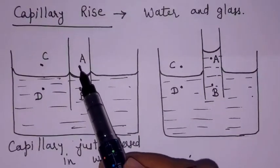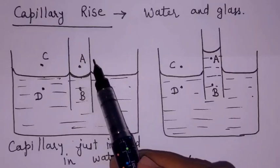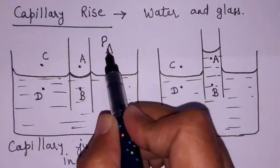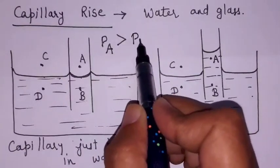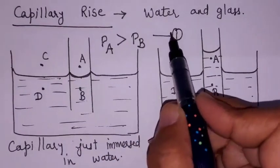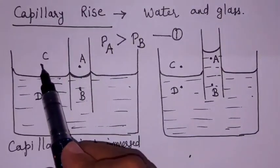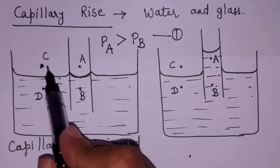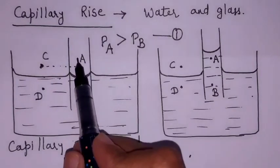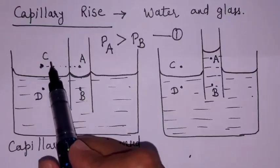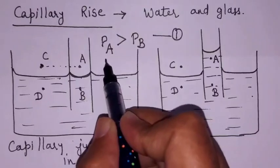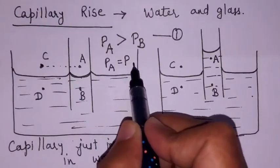Comparing pressure at points A and B: since A lies on the concave side, pressure at A is greater than pressure at B — Reason 1. When comparing points A and C, since they are at the same horizontal level, both experience atmospheric pressure: PA equals PC — Reason 2.